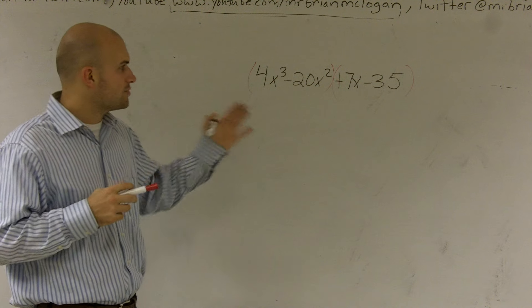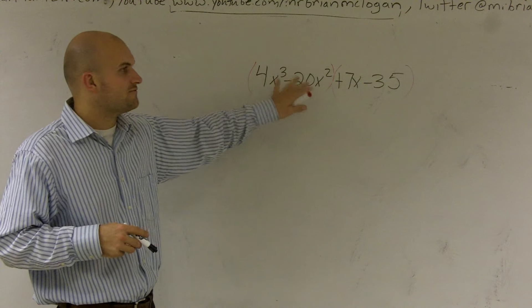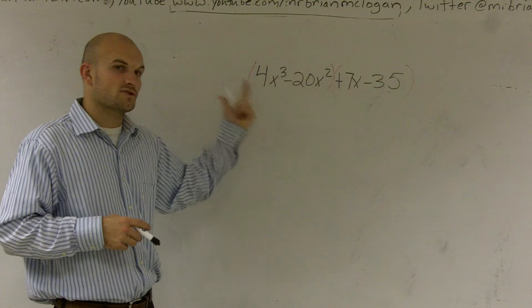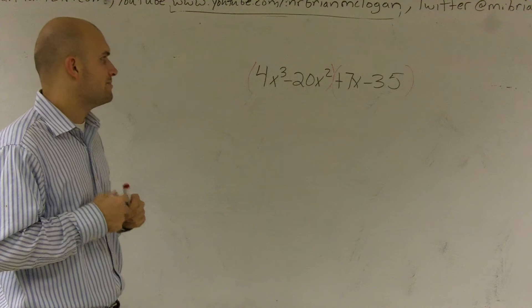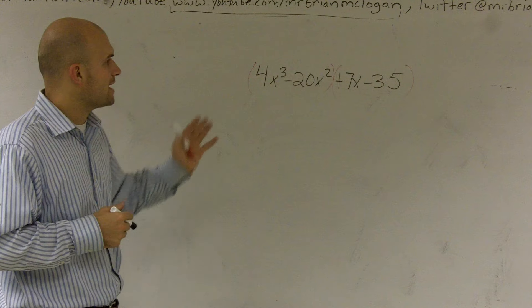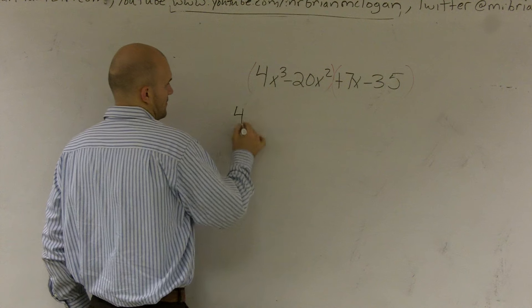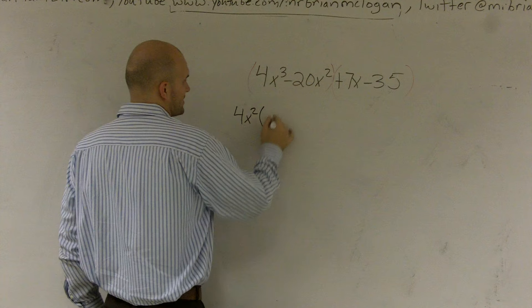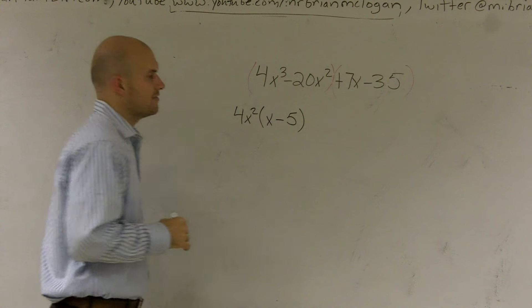So if I can group the first two terms and group the last two terms, what I'm going to do is specialize now in just factoring out those first two terms. So if I look at this, what can I factor out of 4x cubed minus 20x squared? Well, out of here, I can factor out a 4x squared. And I'll be left with an x minus 5.